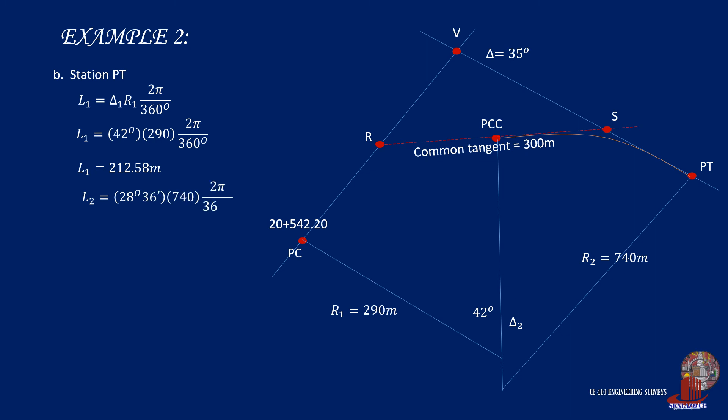With station PC at 20 plus 542.20, add length of curve 1, which is 212.58 to reach station PCC, that is 20 plus 754.78. Then add length of curve 2, which is 369.38 to reach station PT, which turns out to be 21 plus 124.16.